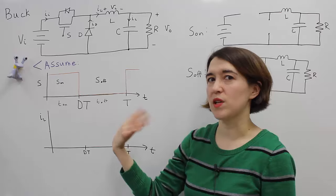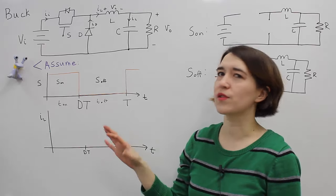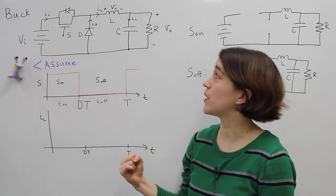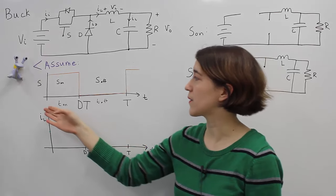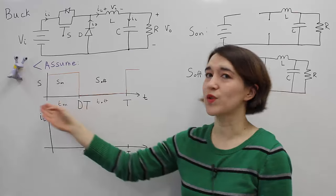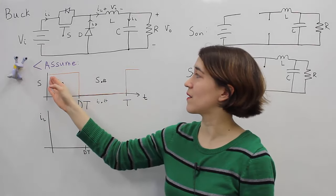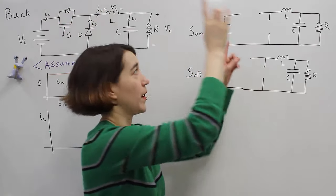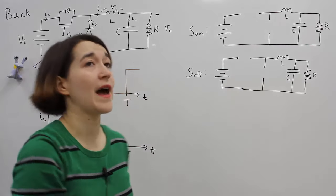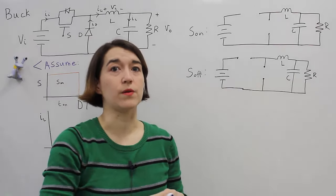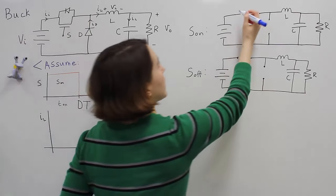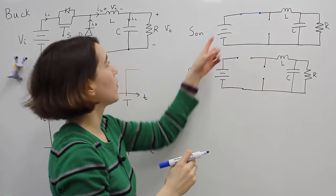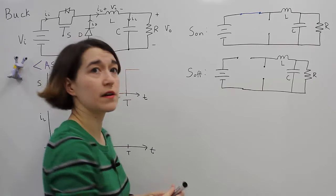The circuit switches between two states. Let's look closer at how the circuit is represented during those two different states. The first state is when S is on. Here's a diagram of a switching signal — when the switch signal is high, the switch is on and will be closed. So if S is on, we draw that in: the active switch is closed, with our positive input voltage V_in.